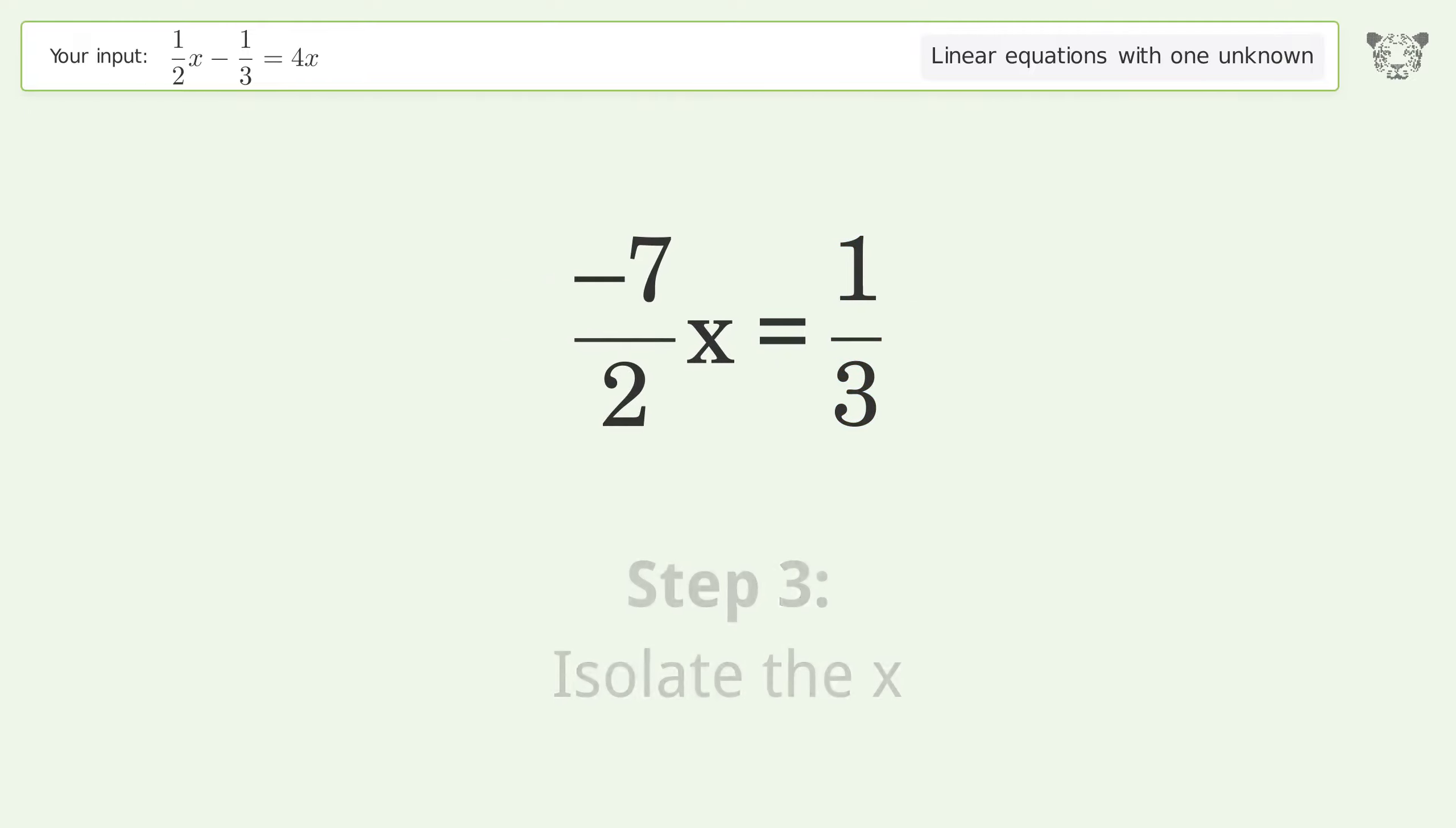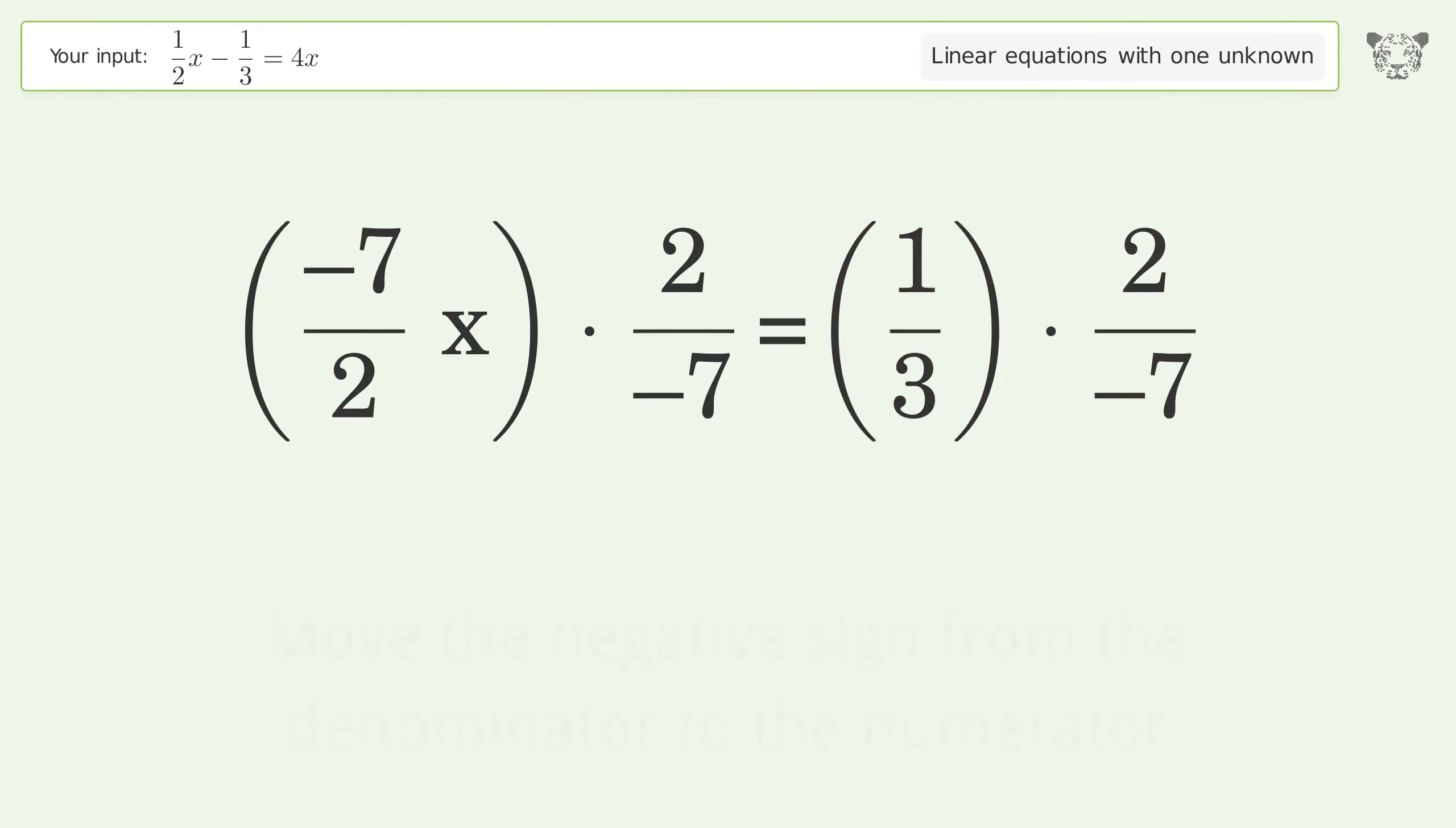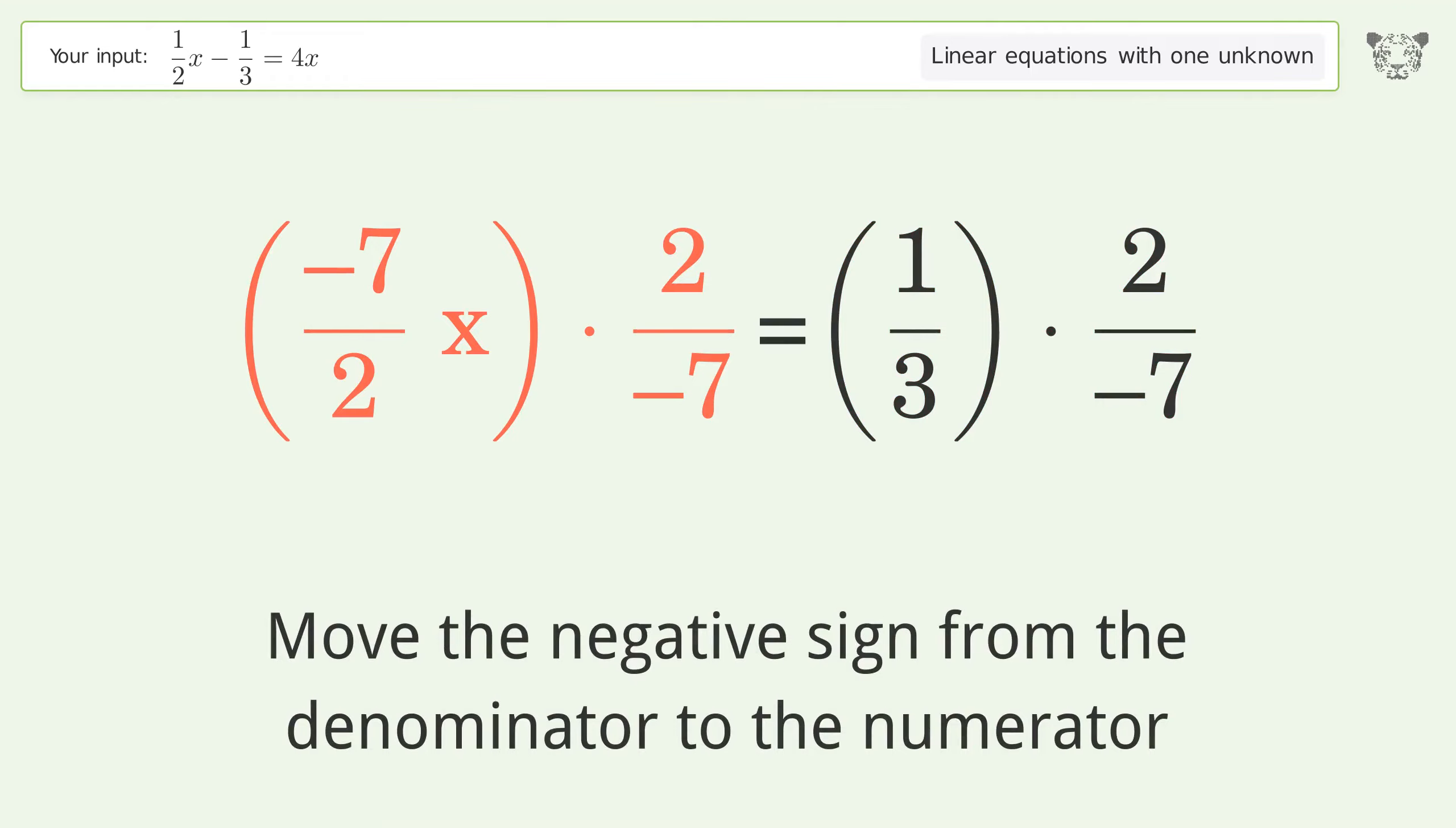Isolate the x. Multiply both sides by the inverse fraction 2 over negative 7. Move the negative sign from the denominator to the numerator.